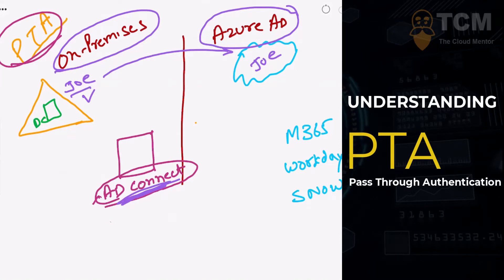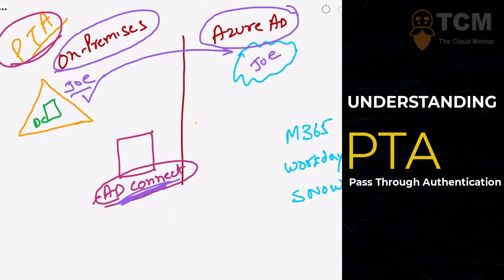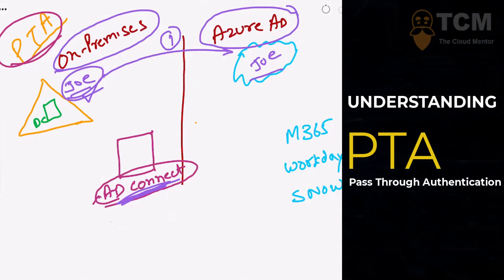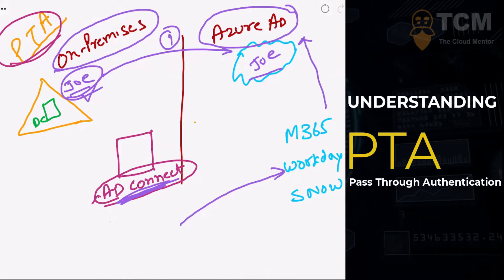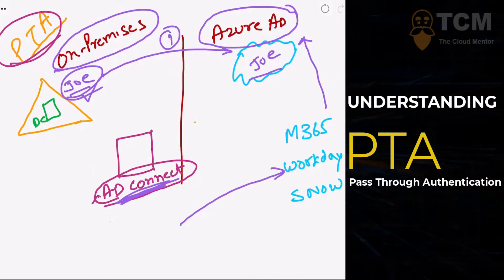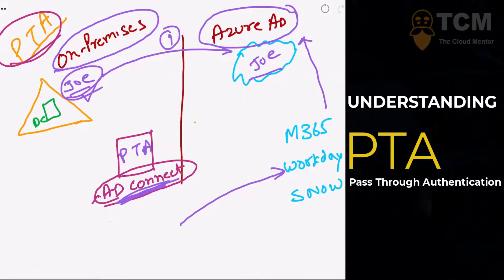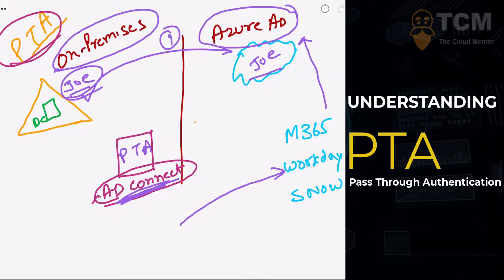The objective of this lesson is to understand the entire flow. Step one is that the user Joe gets synchronized to Azure Active Directory — we are already done with that. Now let's say Joe wants to access an application. The user types in the application's URL and gets redirected to that application, which is integrated with Azure Active Directory. Azure Active Directory is then configured with pass through authentication. Instead of authenticating itself, it will take those credentials and encrypt them. So step one was synchronizing the credentials.